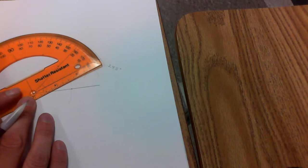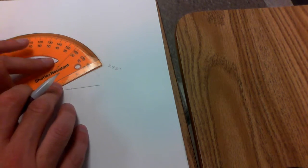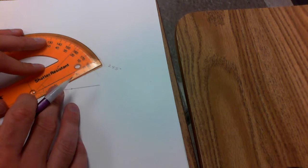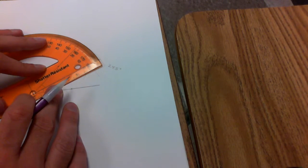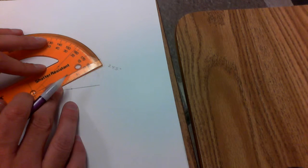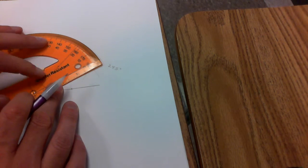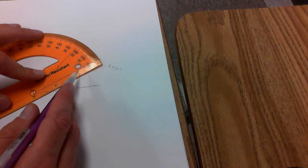If I do the same thing, again taking the crosshair of my protractor and placing it at the vertex, and then lining up the other arm of my angle with the line on my protractor.